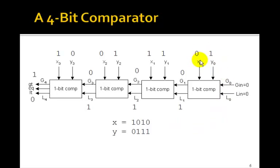So let's see how it works. It starts with the least significant bit. It compares x0 to y0, that's 0 and 1. And since x is less than y, then l1 is going to be 1.